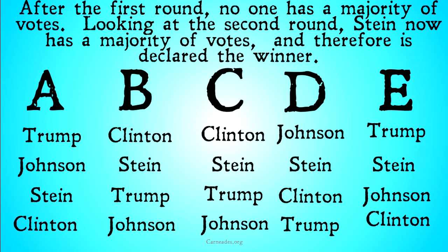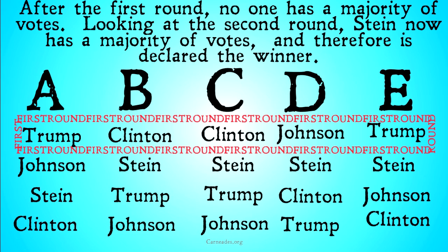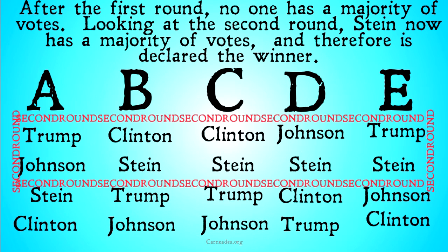Now let's take a look at our presidential example. After the first round, no one has a majority of votes — we have two, two, and one, which is not enough for a majority out of five voters. Looking at the first and second rows, Stein will now have a majority of votes, having four out of the five voters supporting her. No one else has even a majority; everyone else has two votes and Stein has four. Therefore, Stein is declared the winner.